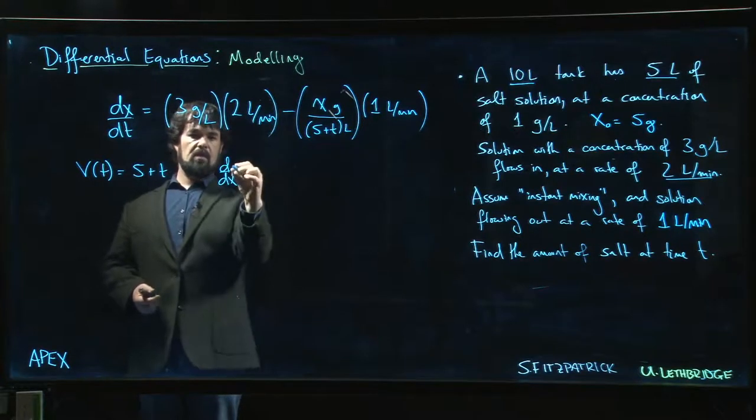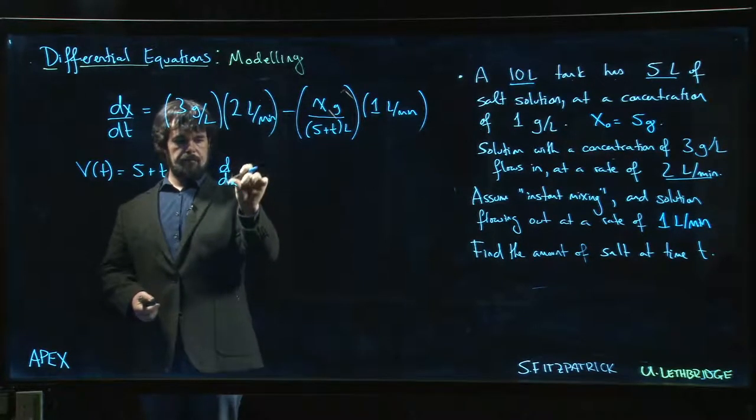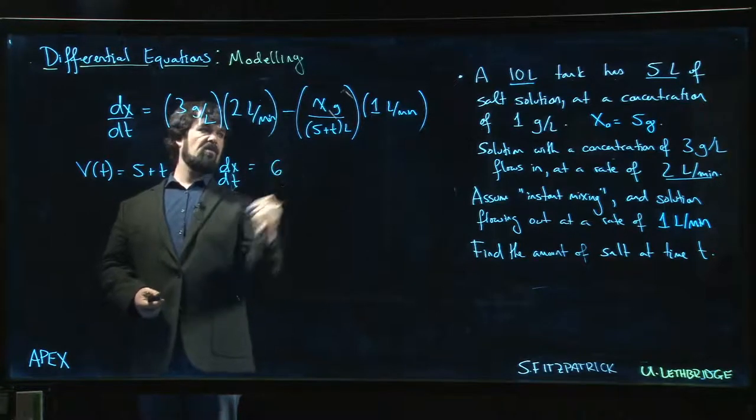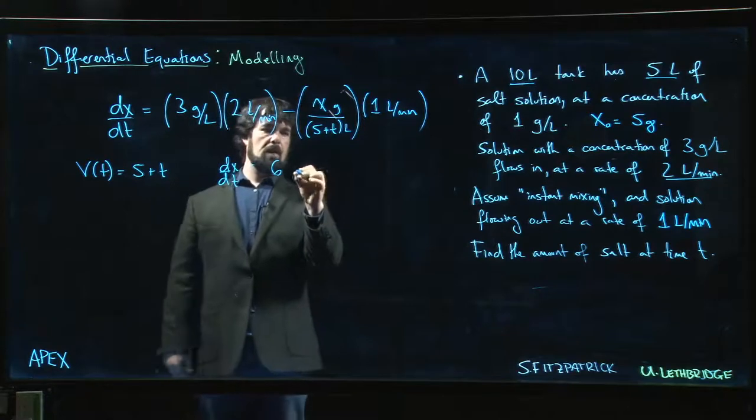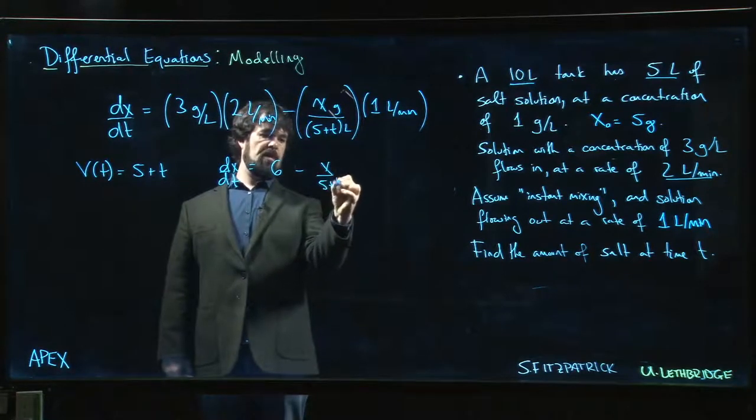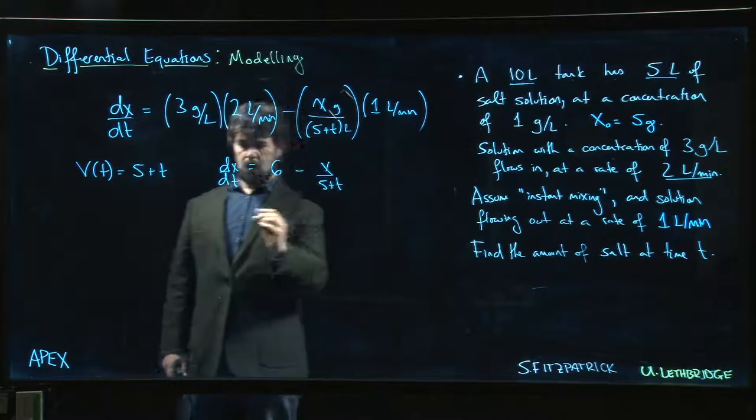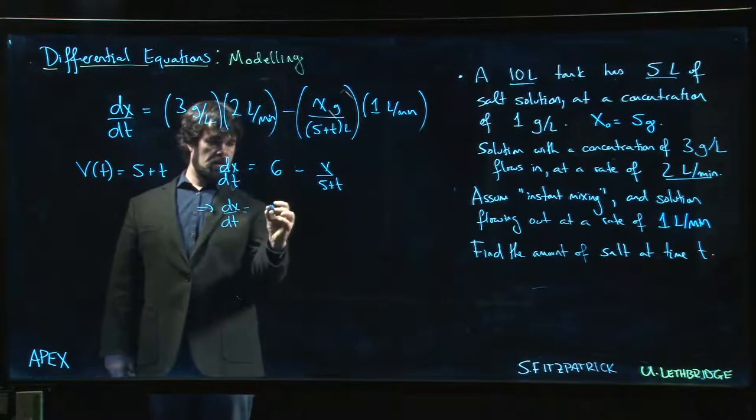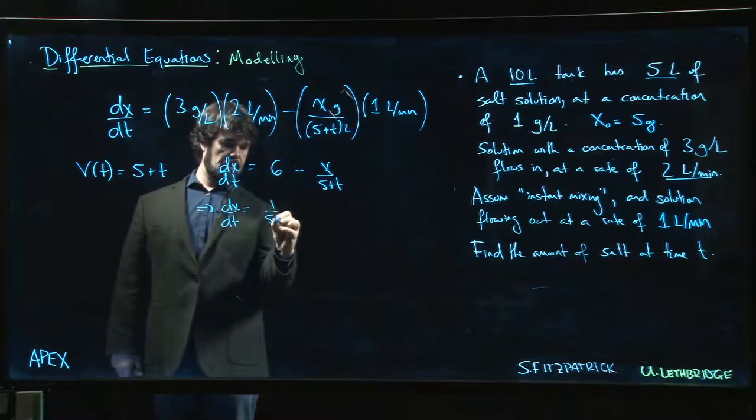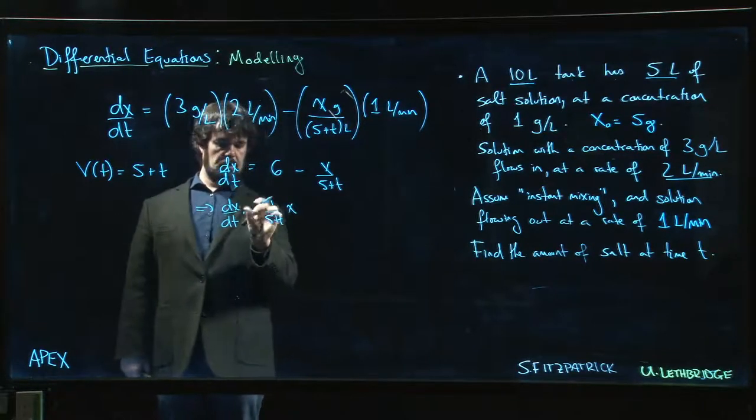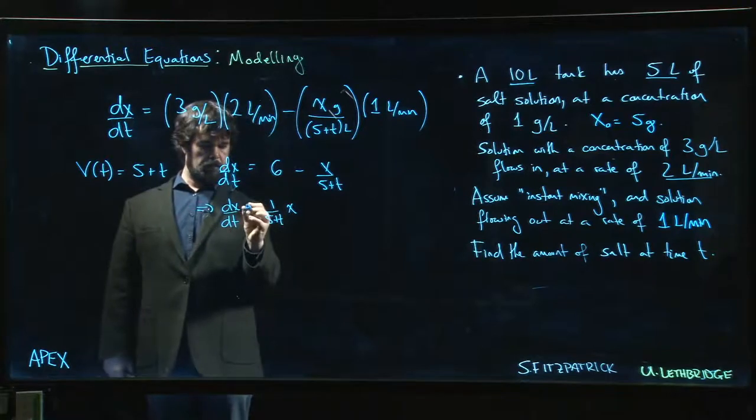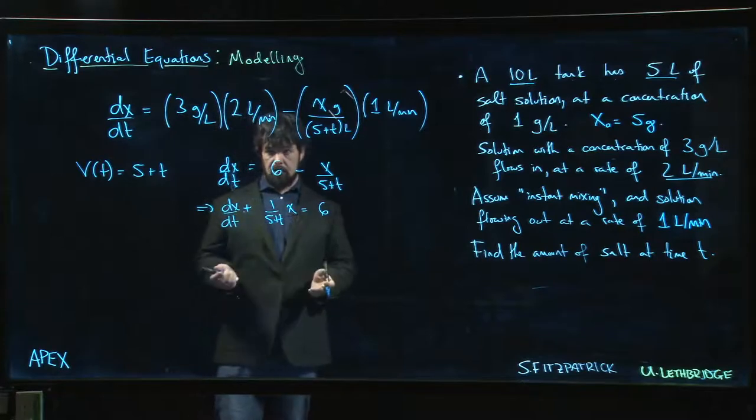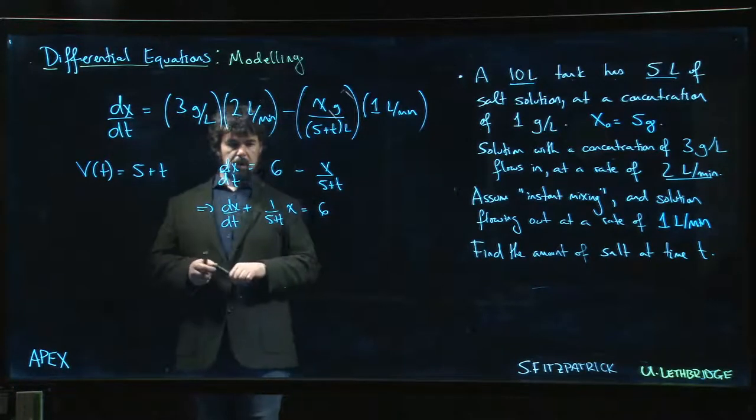If we ignore the units and simplify, dx/dt is going to be 6 minus x over 5 plus t. In other words, dx/dt is 1 over 5 plus t times x plus 6. So far so good. This is linear—this is a linear equation.